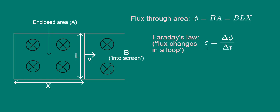If we replace the flux PHI with BLX, the induced EMF becomes the following. Note that this is because B and L are constant. The change in flux is therefore just BL times the change in X. But the change in X over the change in time is nothing other than the speed at which the pink rod moves, V.